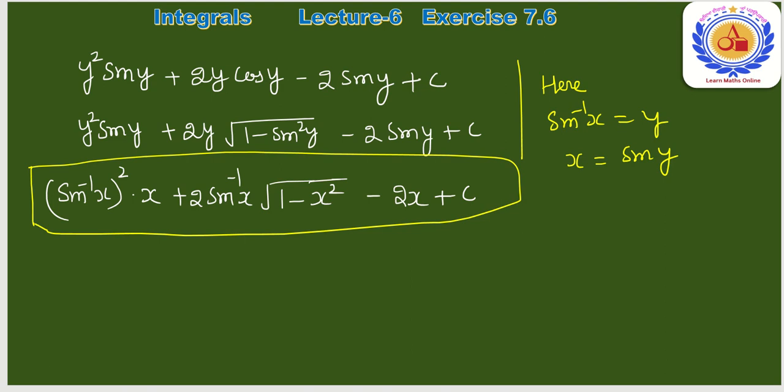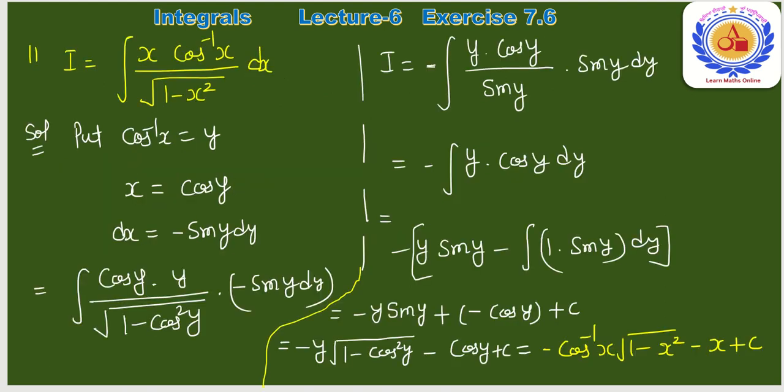Question number 11: ∫x·cos⁻¹(x)/√(1−x²) dx। cos⁻¹(x) को substitute करते हैं: y = cos⁻¹(x), so x = cos y, dx = −sin y dy।